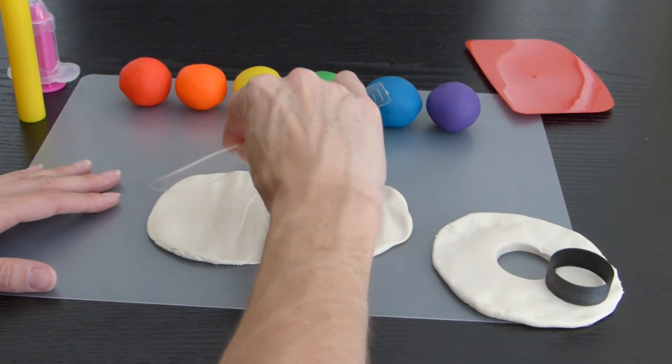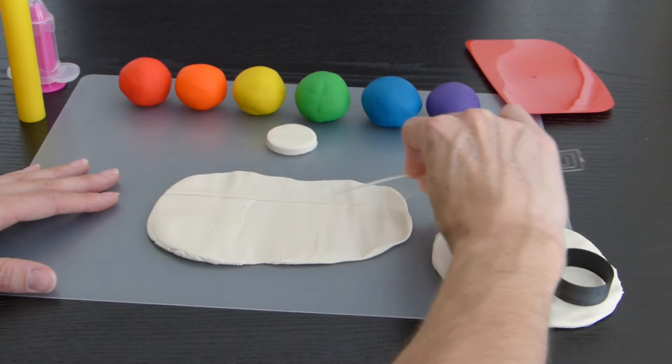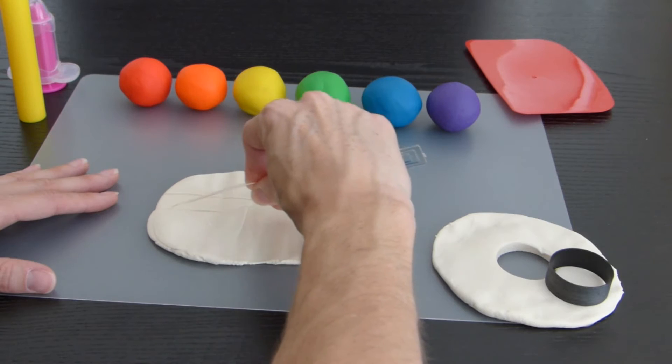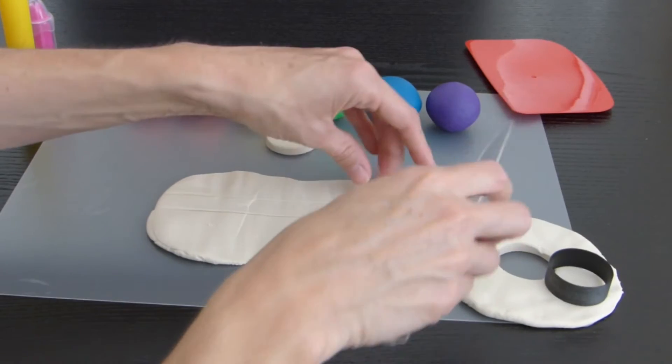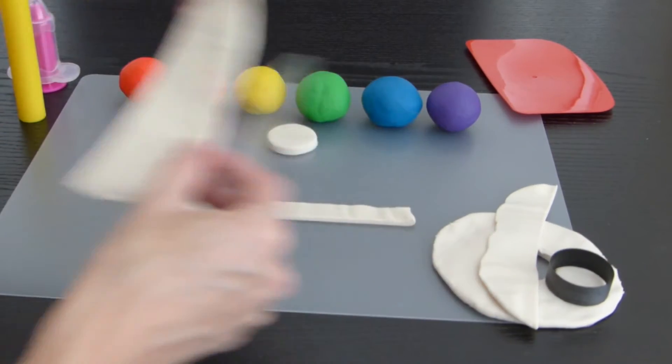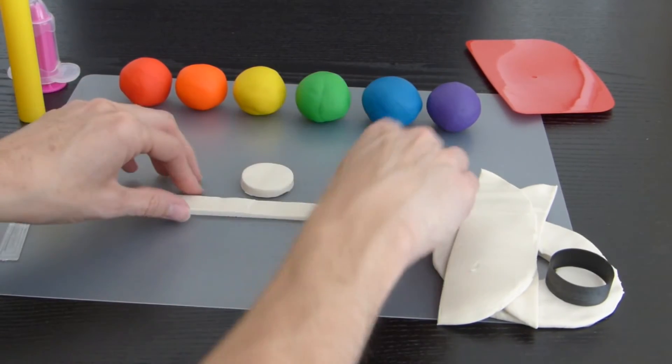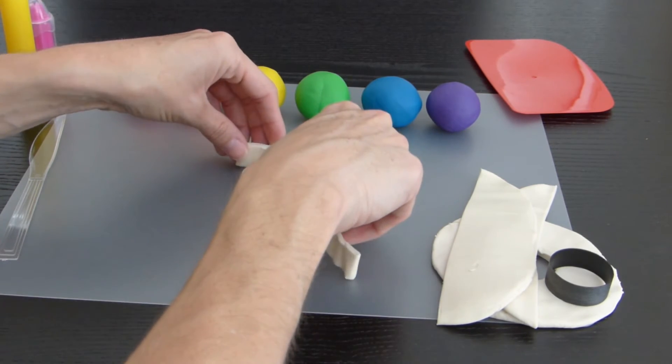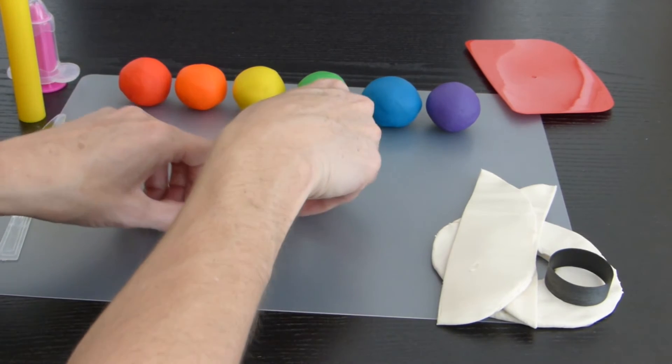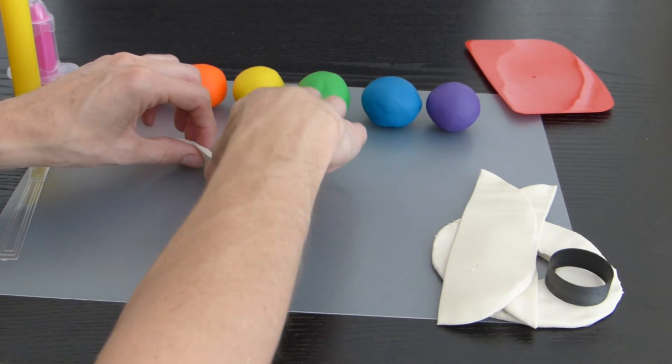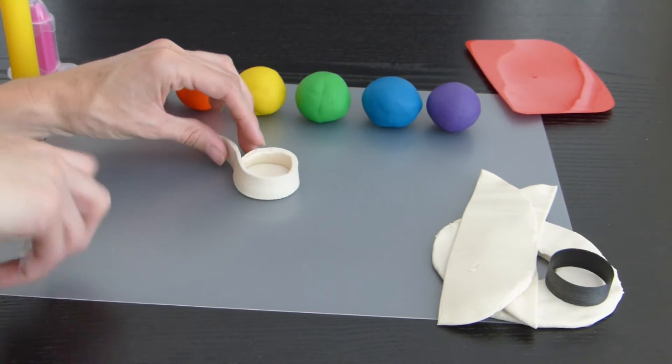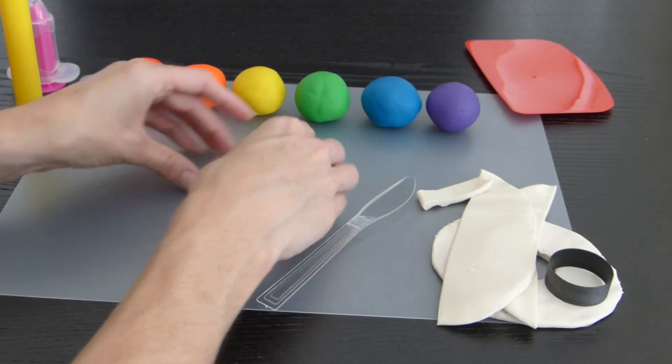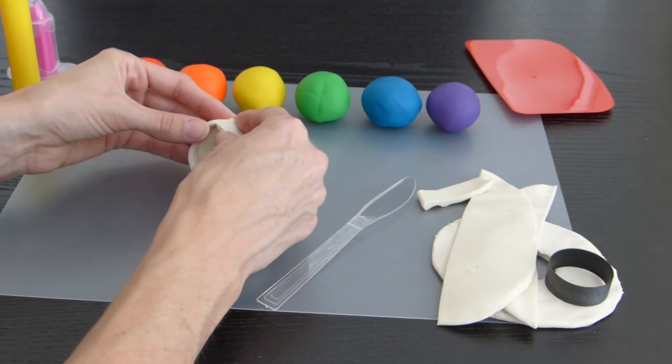Cut out another small strip of white play-doh and wrap it around the circle, then trim off the excess. Once you have the bowl the way you want it, set it aside.